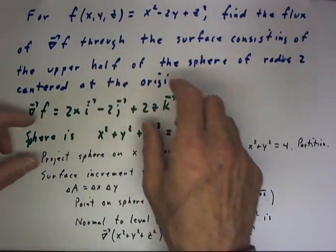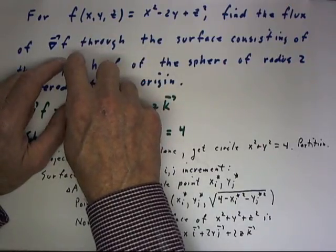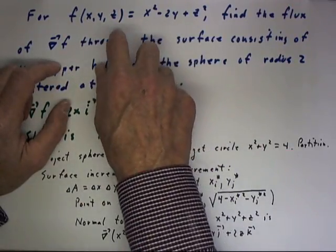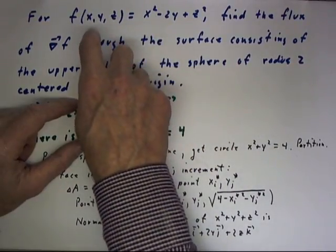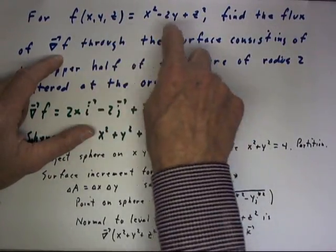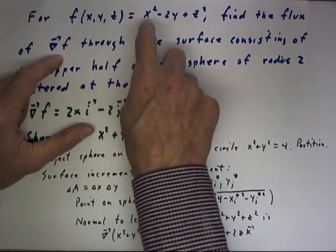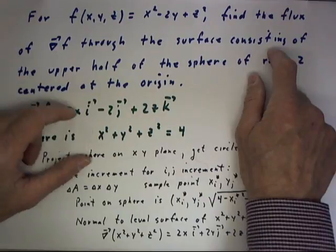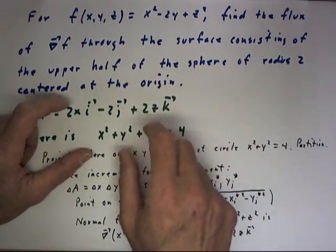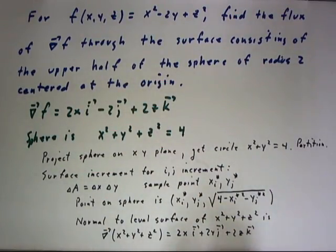As an example of the flux of a vector field through a surface, we're going to find the flux of the gradient of this function: f(x,y,z) = x² - 2y + z², through the surface consisting of the upper half of the sphere of radius 2 centered at the origin.